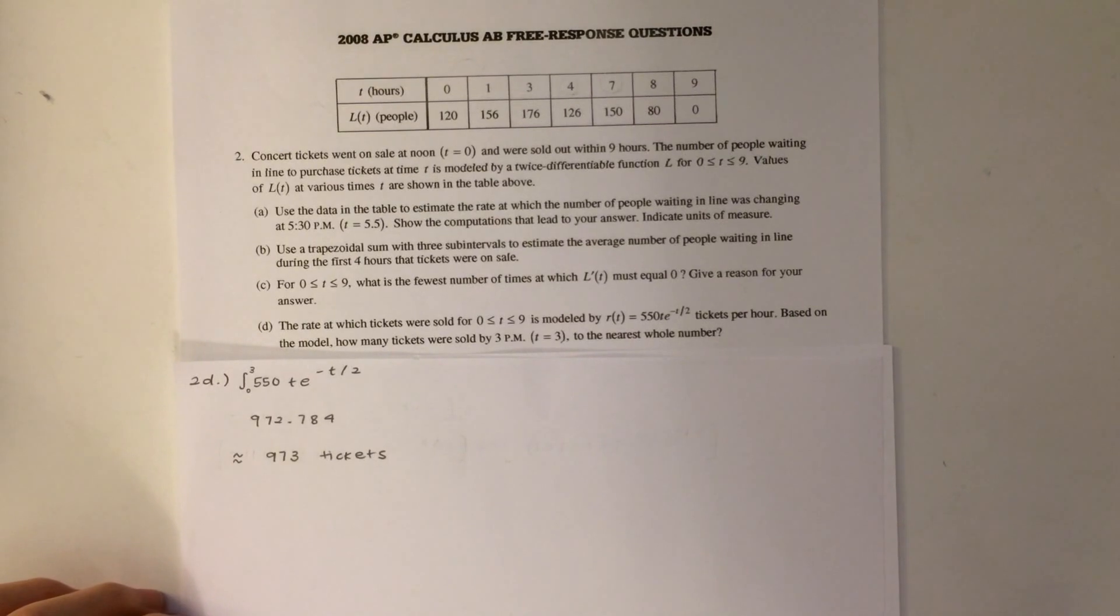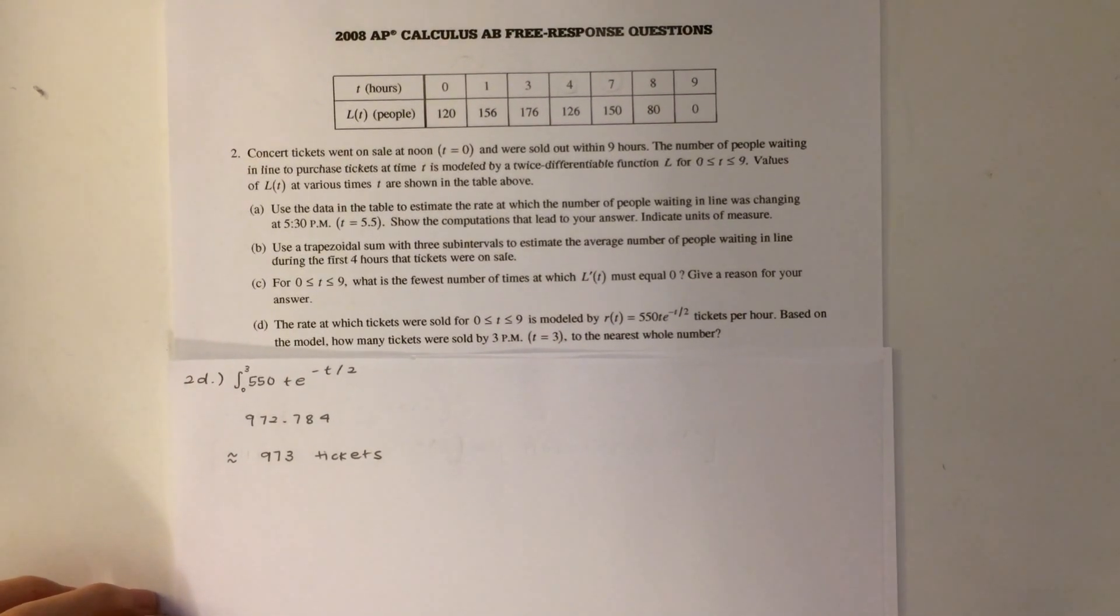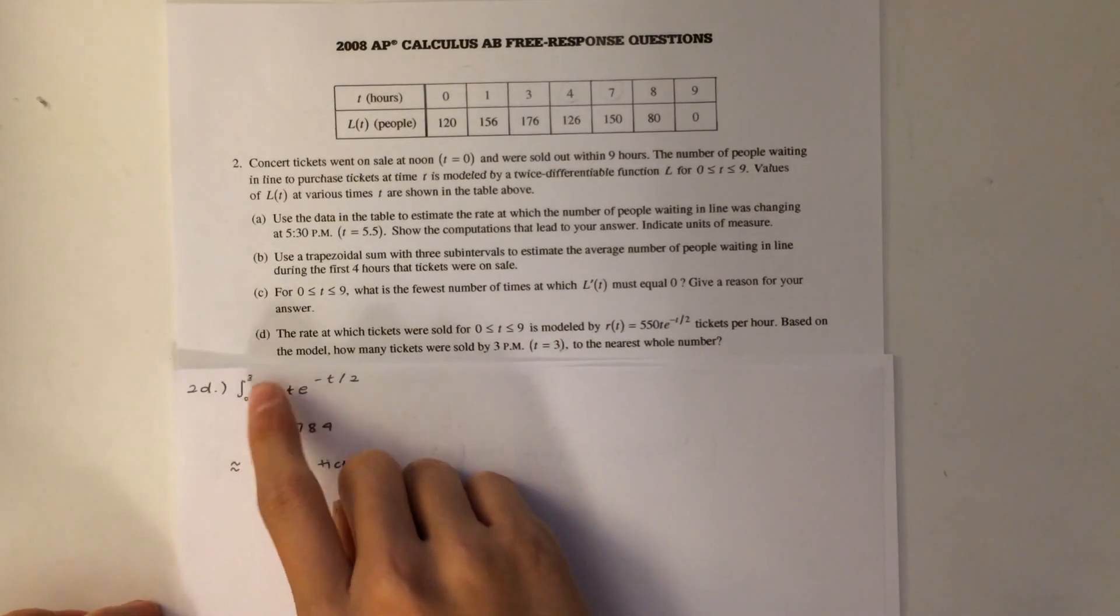The question is asking for how many tickets were sold by 3 hours, not at 3 hours. Therefore, our boundaries are from 0 to 3.